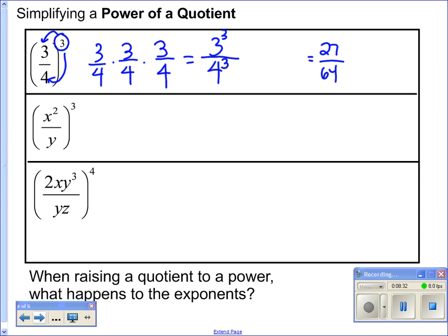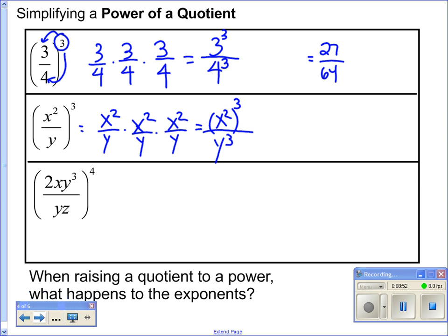Let's see if it works for the next one. I have x squared over y, to the third power: x squared over y times x squared over y times x squared over y. This whole thing ends up being x squared cubed over y cubed. It's really just my numerator raised to that exponent, all over my denominator raised to that same exponent. So it's x squared to the third power over y to the third power. Using power to a power on top: 2 times 3 is 6, giving x to the sixth over y to the third power.